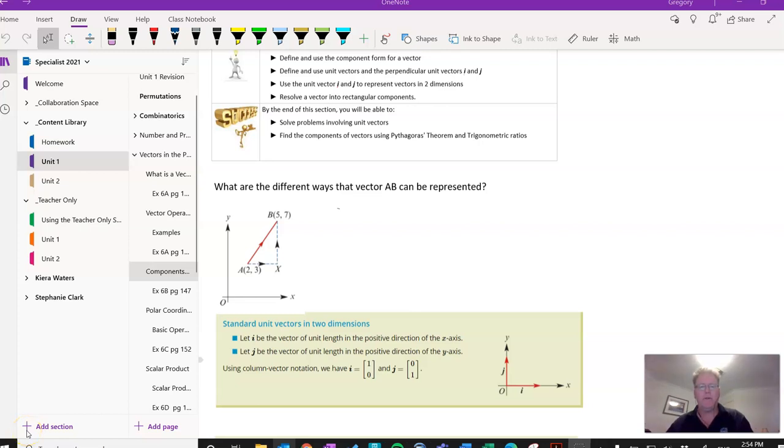This lesson is about components of vectors. In the previous lessons we've looked at what vectors are, how we define them, and the different forms that vectors can take. We've also looked at some vector operations and how we can add and subtract vectors and multiply vectors by a scalar. Today we're going to be looking at what makes up a vector, in other words the components.